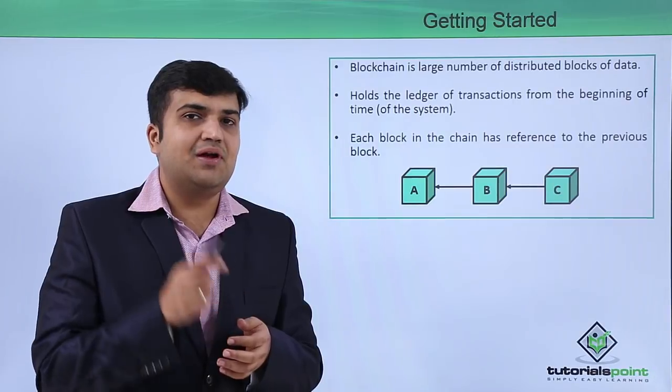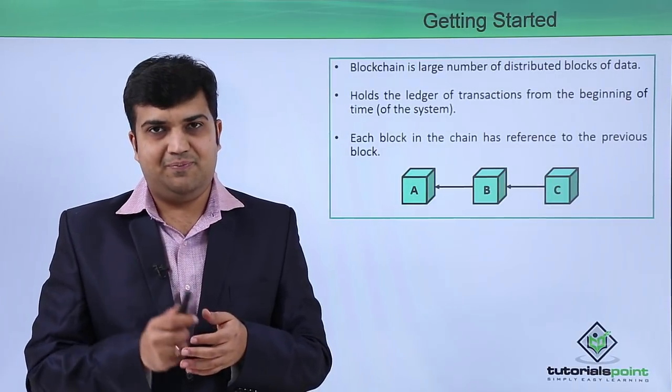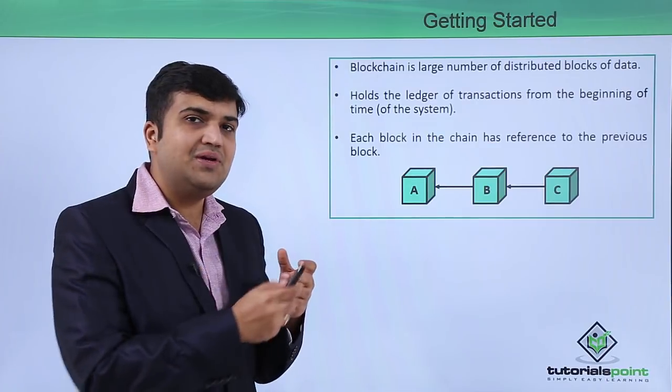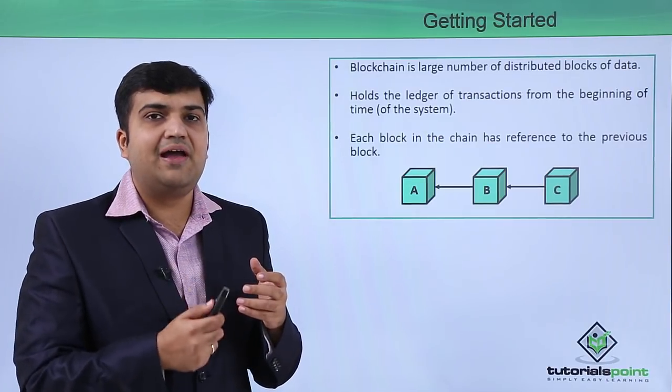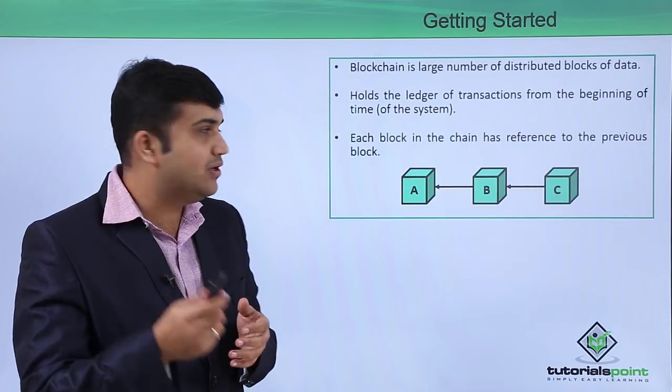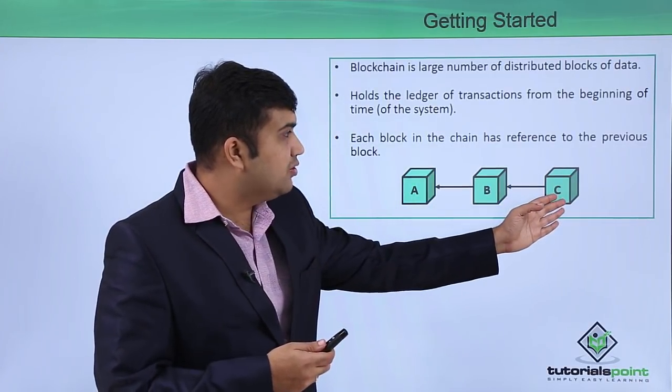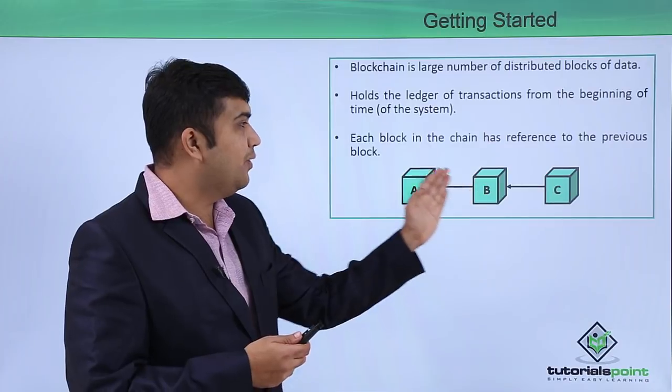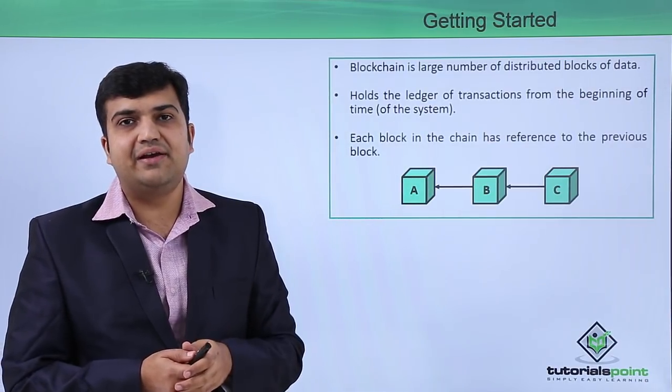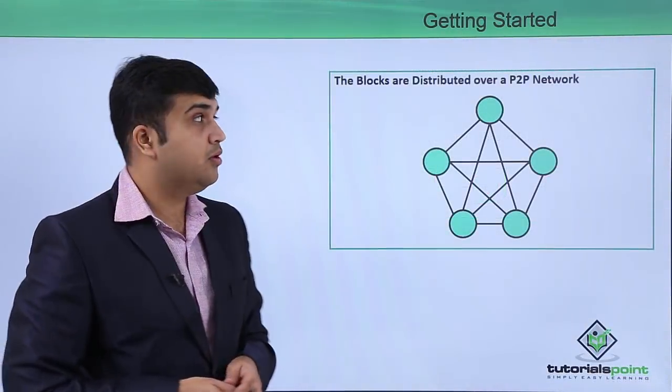Each block of the blockchain is linked to the other blocks via linkages to the previous blocks. In other words, each block of the blockchain has a reference to its previous block. This is how the blocks of the blockchain are connected to each other.